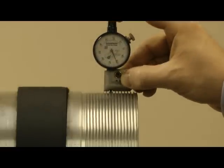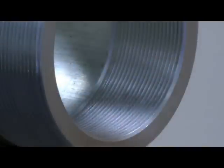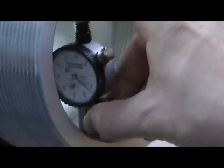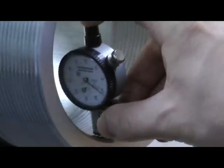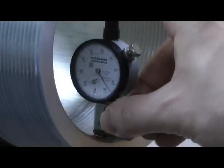Measuring thread height helps monitor and control the depth of cut during manufacturing, detects broken inserts, and can be used to calculate minor or major diameter when only one is known. Accurate thread height contributes to the interchangeability and integrity of the threaded assembly.